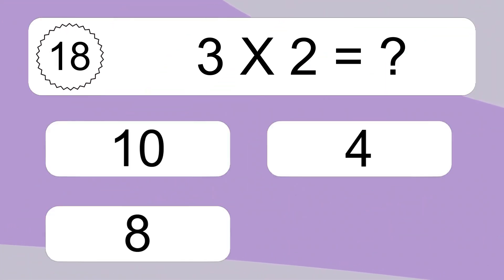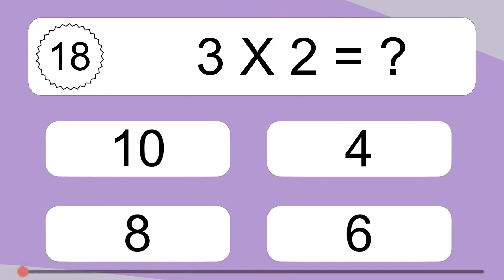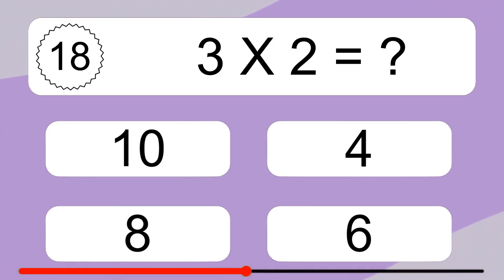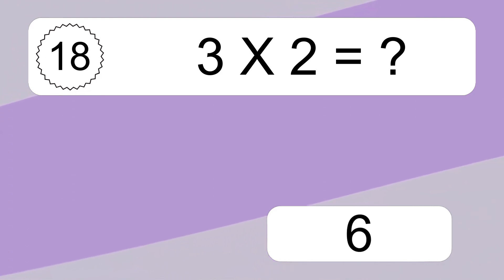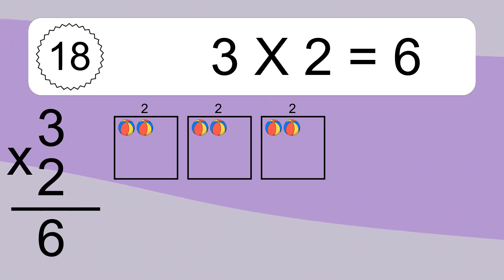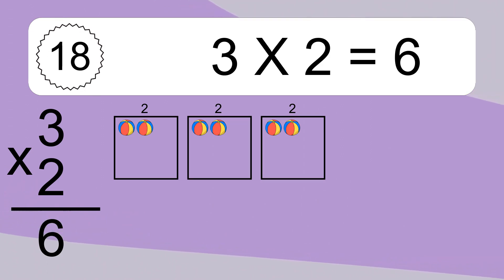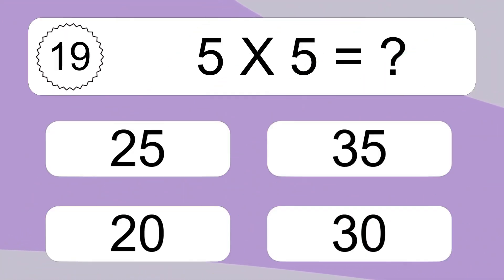3 times 2 equals what? 3 times 2 equals 6. We have 3 boxes and each box has 2 colorful balls inside. If you count all the balls in all the boxes together, you will have 3 times 2 balls. This equals 6 balls.